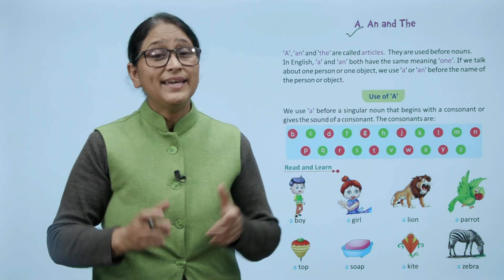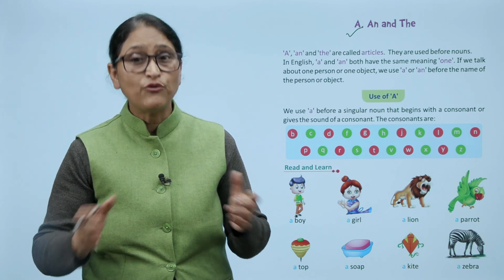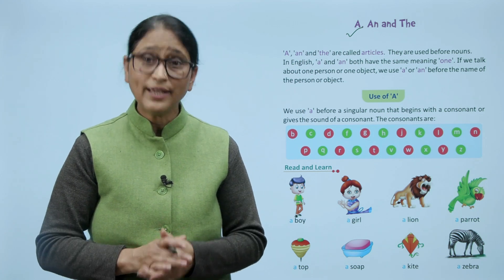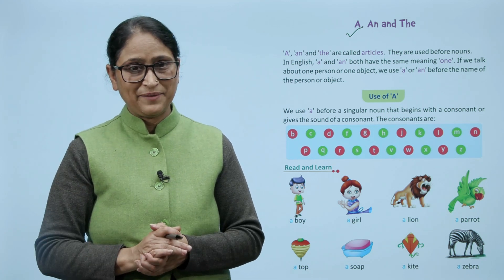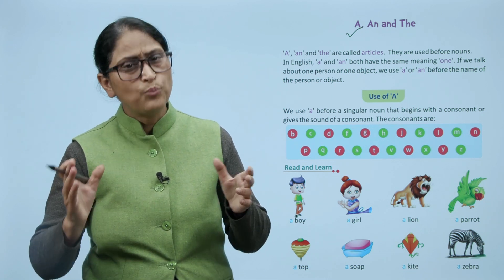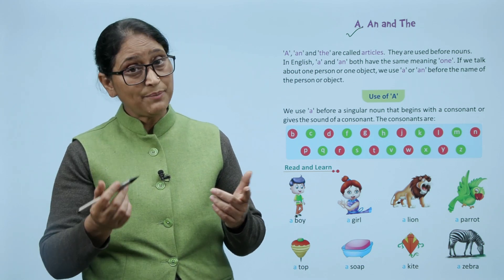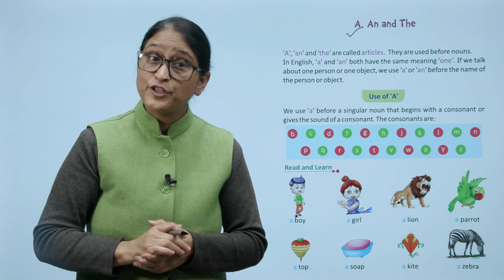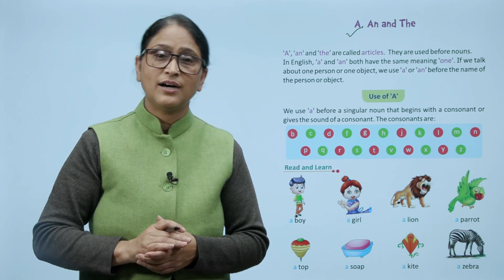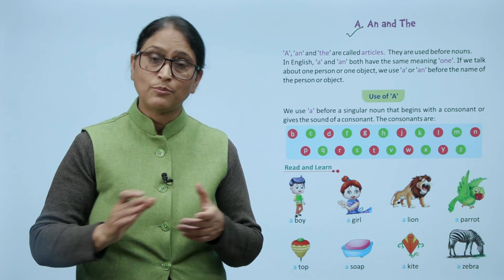A, n and the are called articles. They are used before nouns. A, n and the are used before nouns. In English, a and n both have the same meaning: one. If we talk about one person or one object, we use a or an before the name of the person or object.